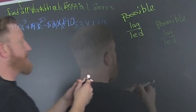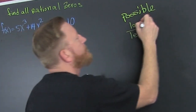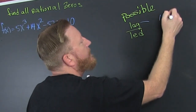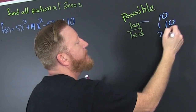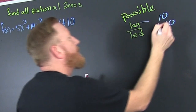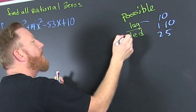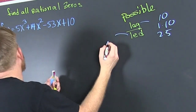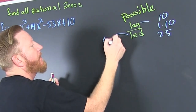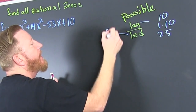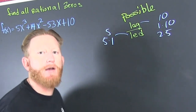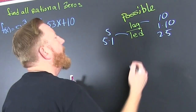My lagging — if I was to break that down — 10, that's 1 and 10, and 2 and 5. My leading, that's 5, that's 5 and 1. So it's all the laggings divided by all the leadings.